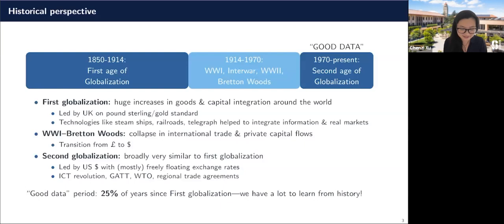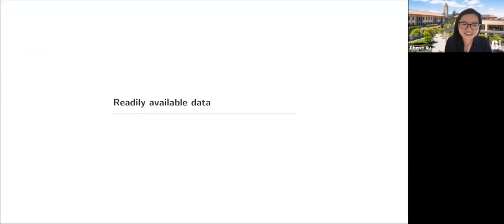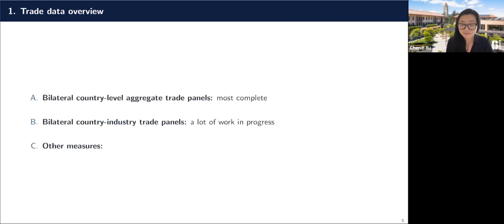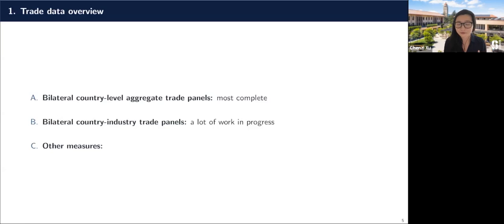Going into the first section of readily available data, I'll start with trade data. Trade data are incredibly well organized and pretty easy to access. There are three sets of data I'll go into. The first are just bilateral country-level aggregate trade panels — bilateral flows between countries, exports and imports. These are very complete, and there's almost no excuse for not using them if you have any project where you might need them.